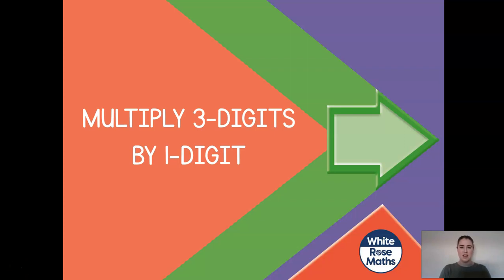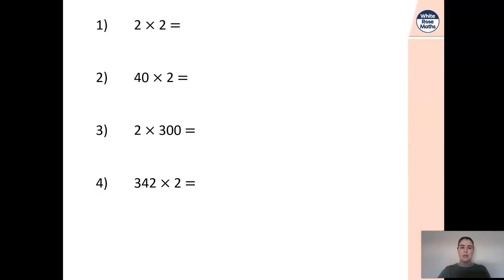Good morning to all of my lovely year fives. I hope you are all well. We're going to move on with our second lesson for our maths unit this term and we're going to be looking at multiplying three digits by one digit. I hope you got on well yesterday. We're going to have a quick recap and warm your brains up before we start our lesson. I'd like you to have a go at questions one to four and see if you can think about how you might answer the fourth question having worked out the answers to questions one, two, or three. Pause the video and have a go.